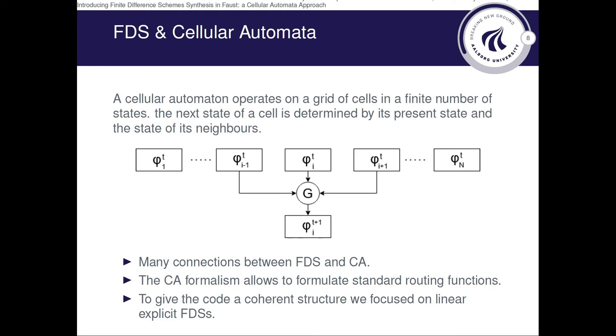A cellular automaton is an algorithm which operates on a grid of cells, which can be in a finite number of states. And the next state of each cell is determined by its present state and the state of its neighbors, which are elaborated by a transition rule, which in this case is denoted as G.